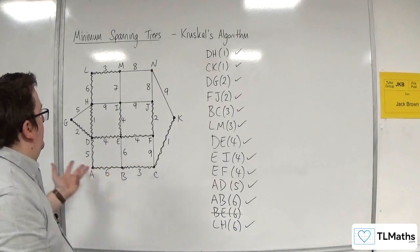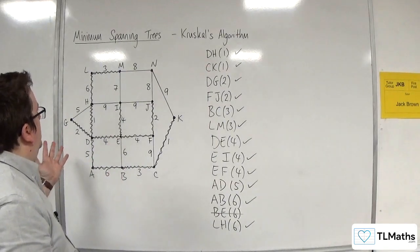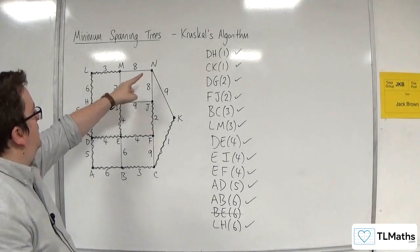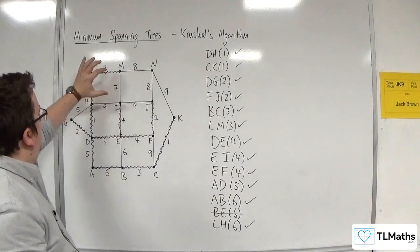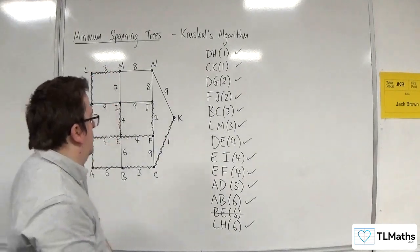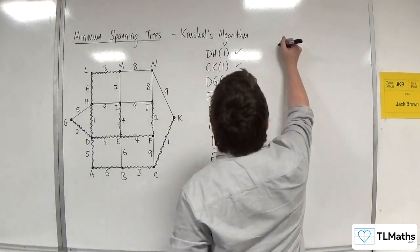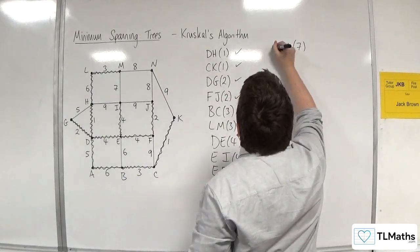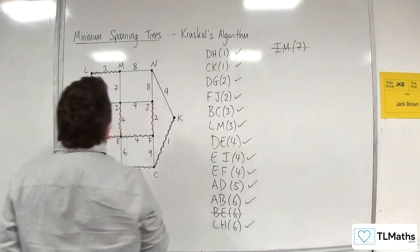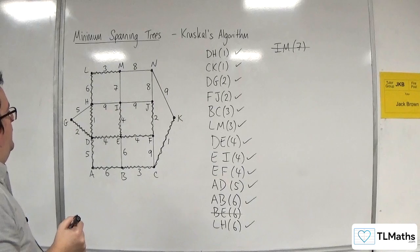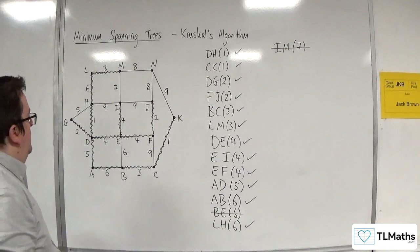So we've gone through the 6s. Don't think there are any more 6s to consider. So we're looking at 7s now because we still haven't connected N. We've got IM there, but that causes a cycle. So I'm not having IM. So I'm going to go up here now. IM of 7 has been considered, but I'm not having it.